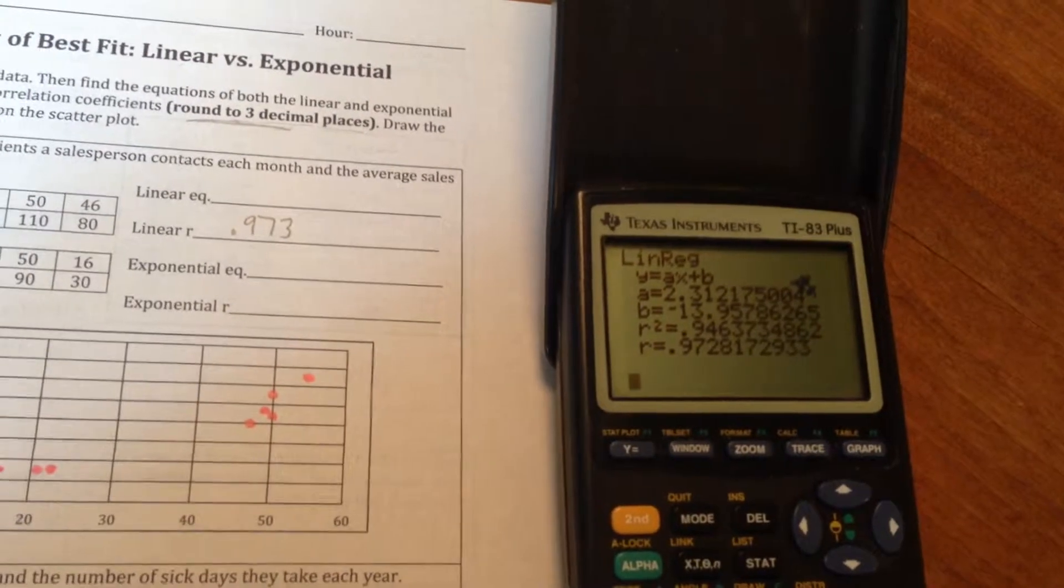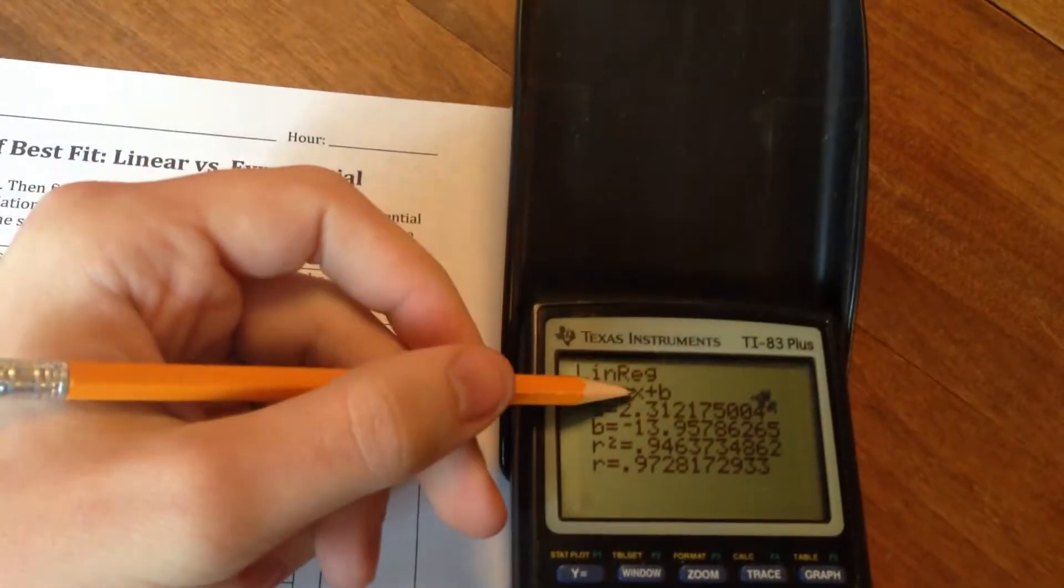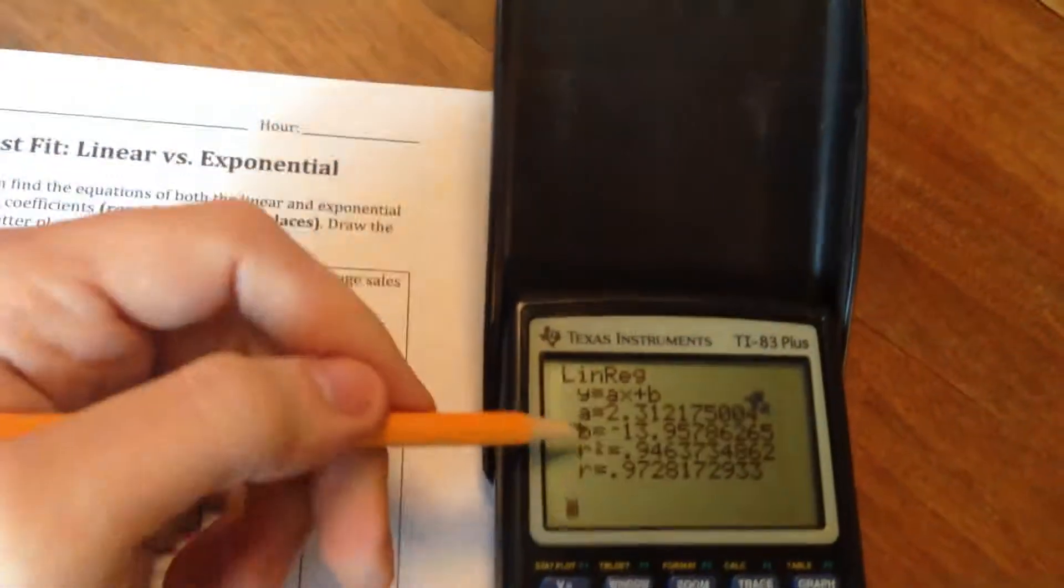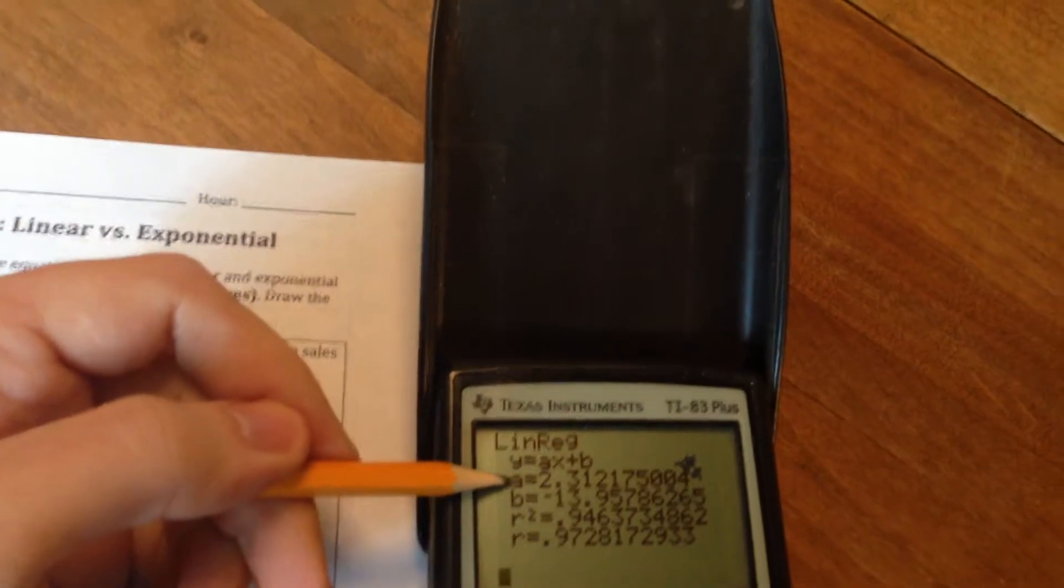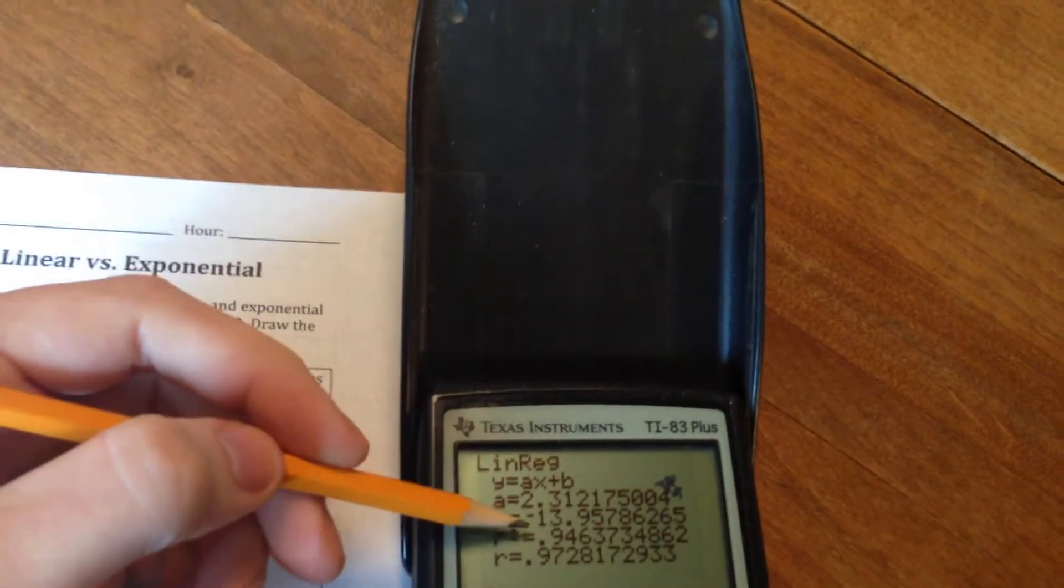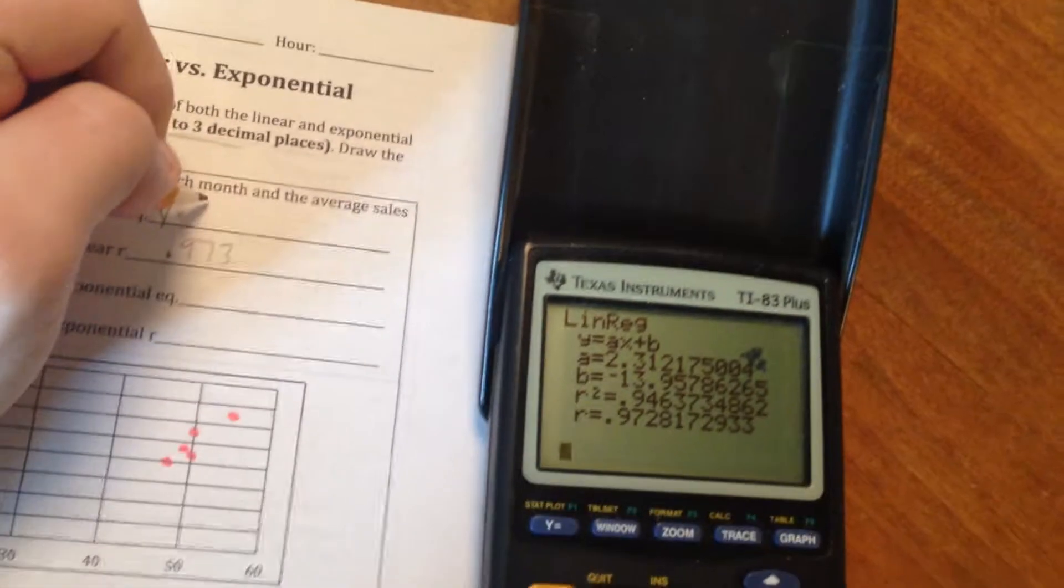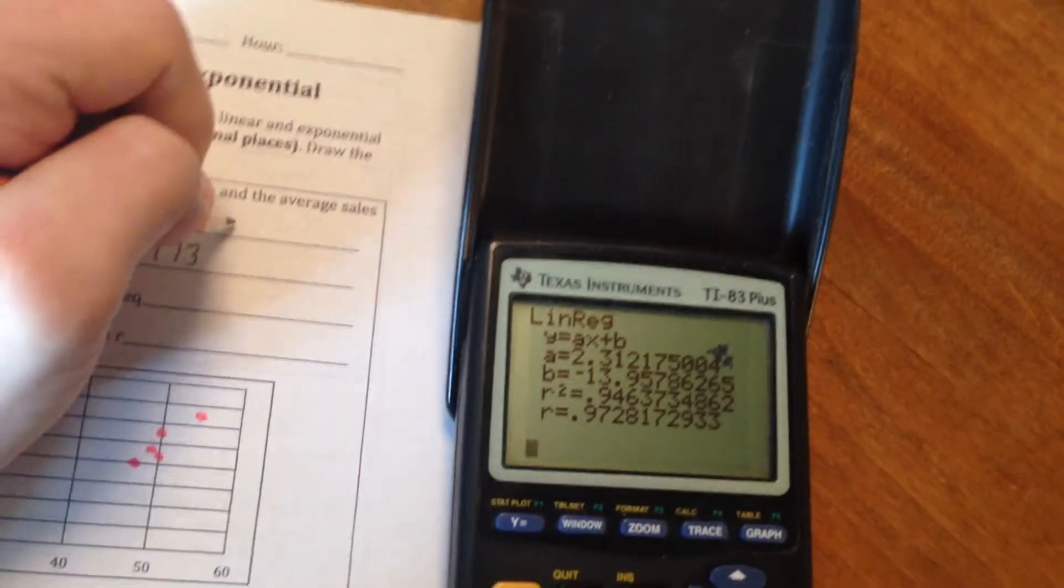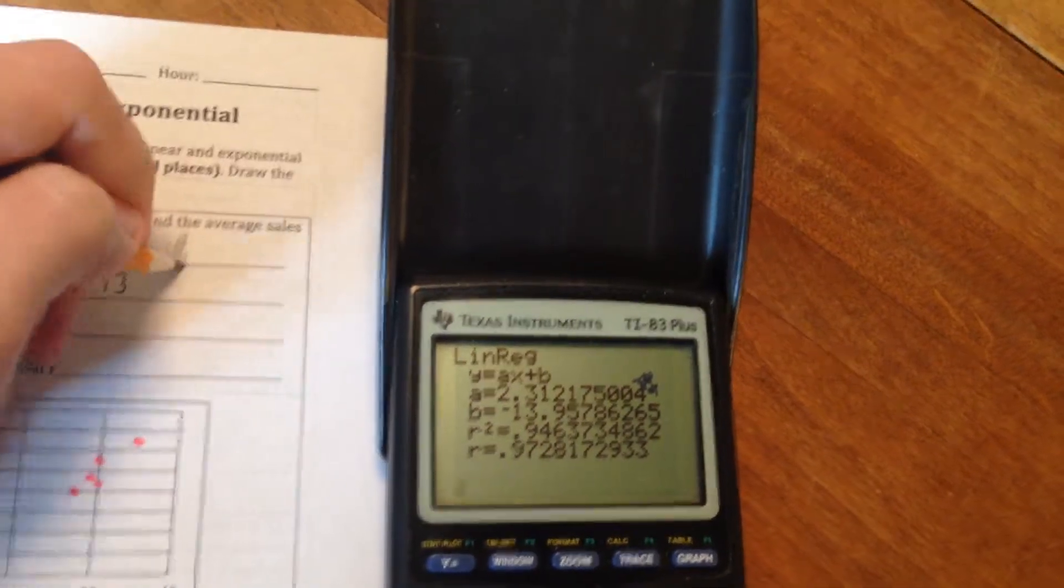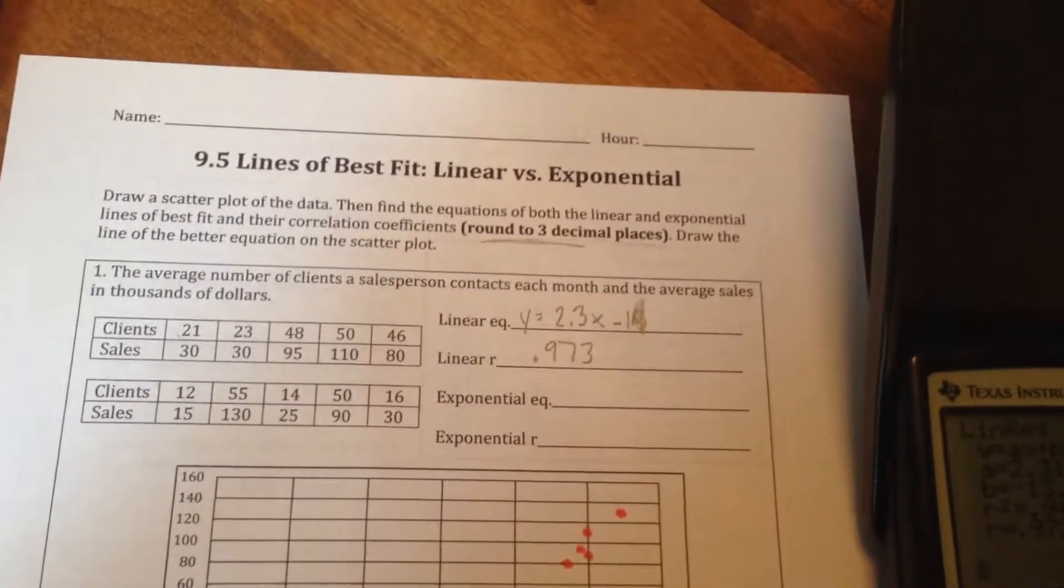Now, the next part is that we need to write the equation of the line that best fits this data. So if you look right here, it's kind of telling us the form of the equation. Y equals AX plus B. You guys are more familiar with that being MX plus B. But the calculator just kind of puts an A instead of an M. The other cool thing that this screen does is it is going to give us an A equals 2.3, blah, blah, blah, and B equals negative 13.95, blah, blah, blah. And so we're just going to replace these letters into here. So our equation is going to be Y equals 2.3X minus, it would be 13.95, which is actually going to round to a 14. The equation for the line that best fits this data, if it was a straight line, is going to be 2.3X minus 14.